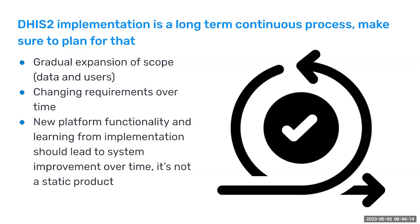Requirements are changing over time. What is the right thing to do in year one might have changed in year three. Make sure that you iterate and revisit your plans and your assumptions. At DHIS2, we release our software at least once or twice a year, with a lot of new functionality coming. It's good to revisit and get the latest updates. It's not a static product.